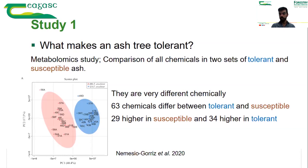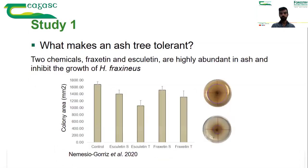Among the candidates identified, we found two — Fraxidin and Esculetin. They belong to the chemical family of coumarins and are highly abundant in ash. Both show the ability to inhibit the growth of Hymenoscyphus fraxineus, which is the fungus that causes ash dieback.